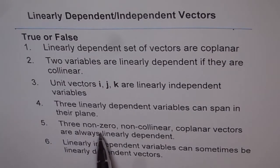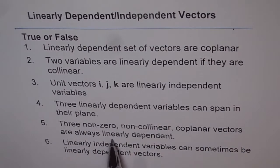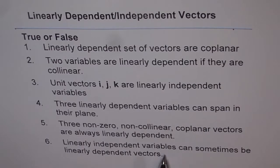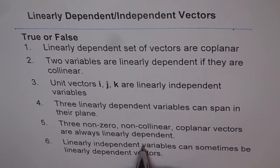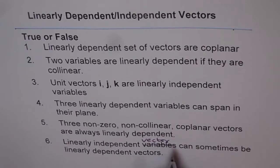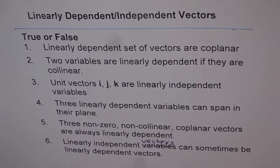Question 5: Three non-zero, non-collinear, coplanar vectors are always linearly dependent — true or false? Question 6: Linearly independent vectors can sometimes be linearly dependent vectors. Note: 'variables' should read 'vectors' — that is a typing error.